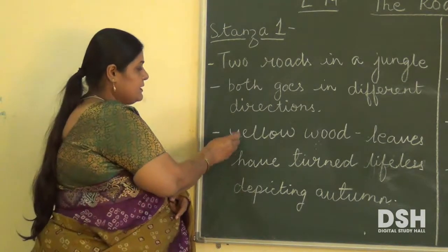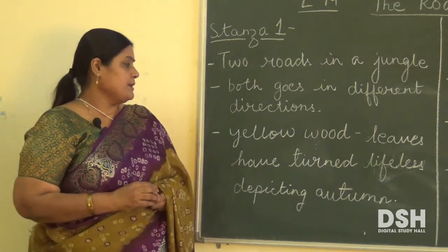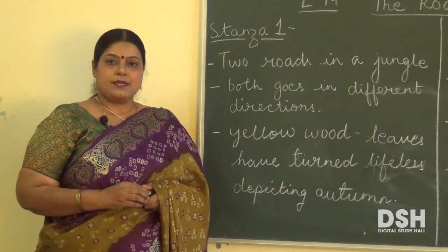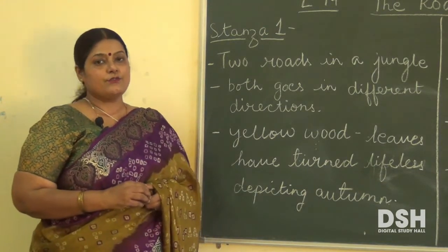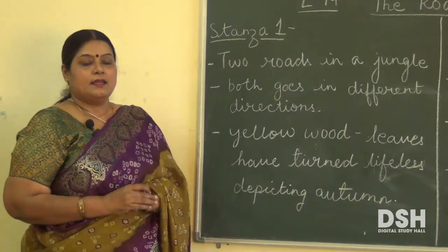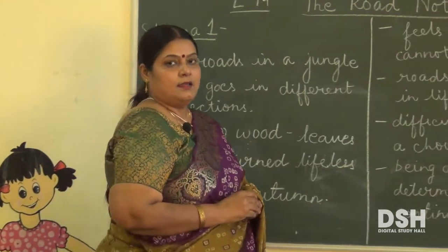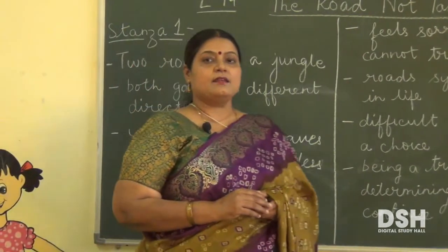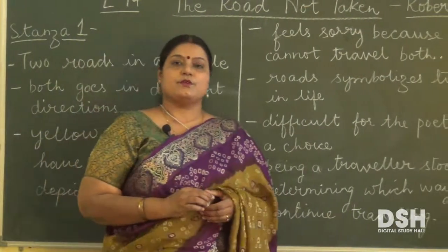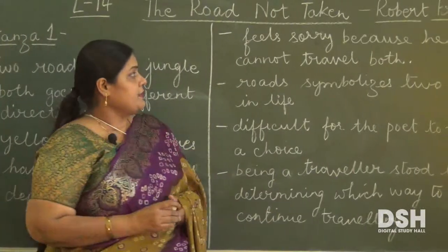Further he added that it was a yellow wood. Yellow wood means the leaves have turned lifeless, which depicts the season of autumn. It means that while it was the season of autumn, he was there in the jungle where he saw two roads which were going in different directions.